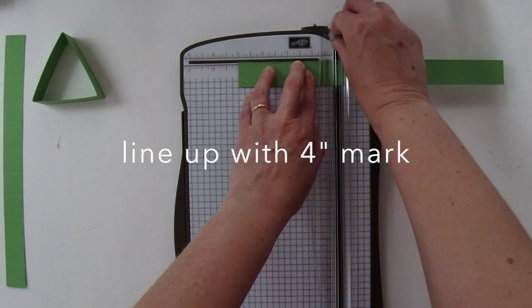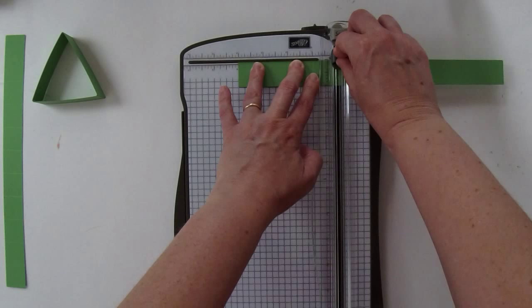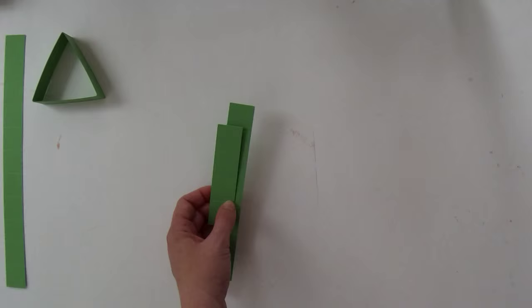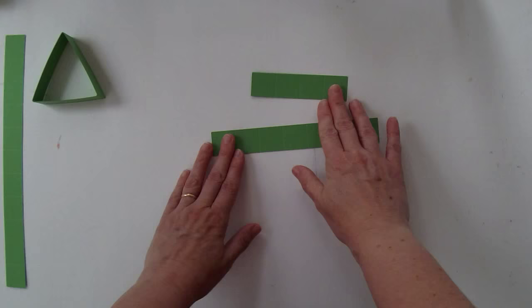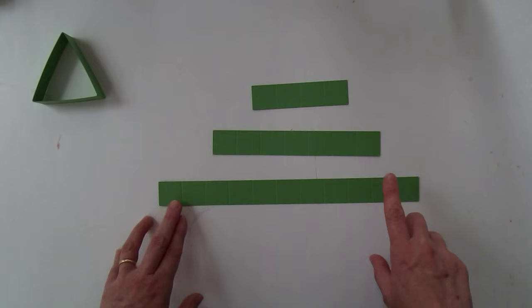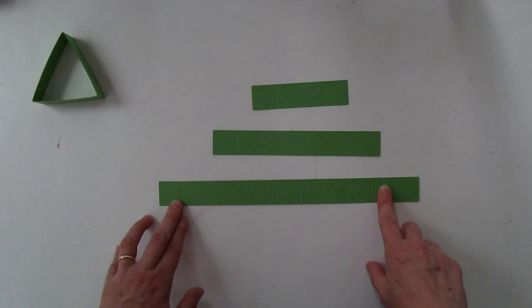So now I have two 11 inch strips by 1 inch and I'm going to put one of those strips aside and then I'm going to take the other one and I'm going to line it up here with my 4 inch mark and we're going to cut it one, oh that's my scoring blade, that won't work. So let me bring up my cutting blade and let's cut that.